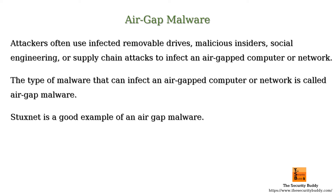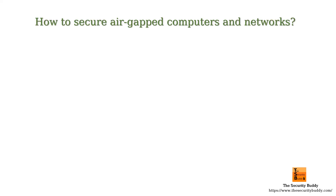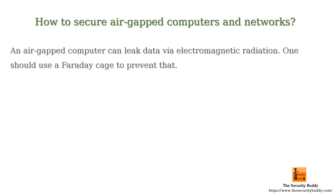Stuxnet was first uncovered in 2010. The malware used zero-day vulnerabilities to infect many SCADA systems using removable drives like USB drives and caused heavy damage. Moreover, an air gap computer can also leak data via electromagnetic radiation.